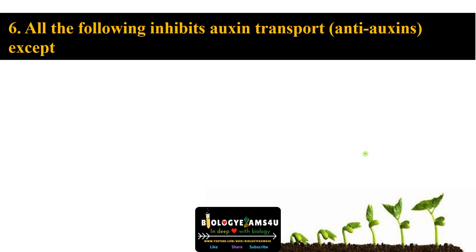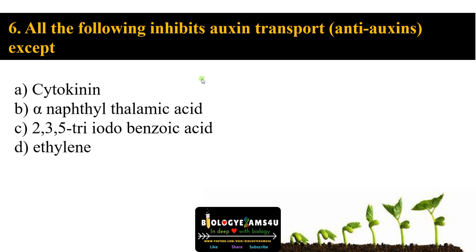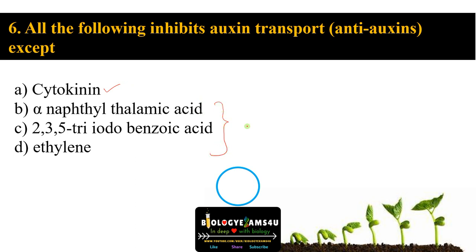Question number six: all of the following inhibit auxin transport except. Chemicals that inhibit auxin transport are called anti-auxins. Options: A cytokinin, B naphthalene thalamic acid, C 2,3,5-triiodobenzoic acid, D ethylene. The answer is cytokinin. The other three are anti-auxins, including the gaseous hormone ethylene.